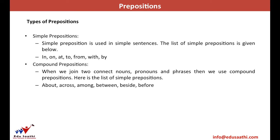A compound preposition connects nouns, pronouns, and phrases in a way that shows their relation. For example, 'across': if I say 'I saw a deer across the road,' 'across' is justifying the position of the deer with respect to both me and the road — it connects multiple references. Compare this to 'the book is on the table,' where the book's position is only with respect to the table. Since 'across' involves multiple positional references, it becomes a compound preposition.